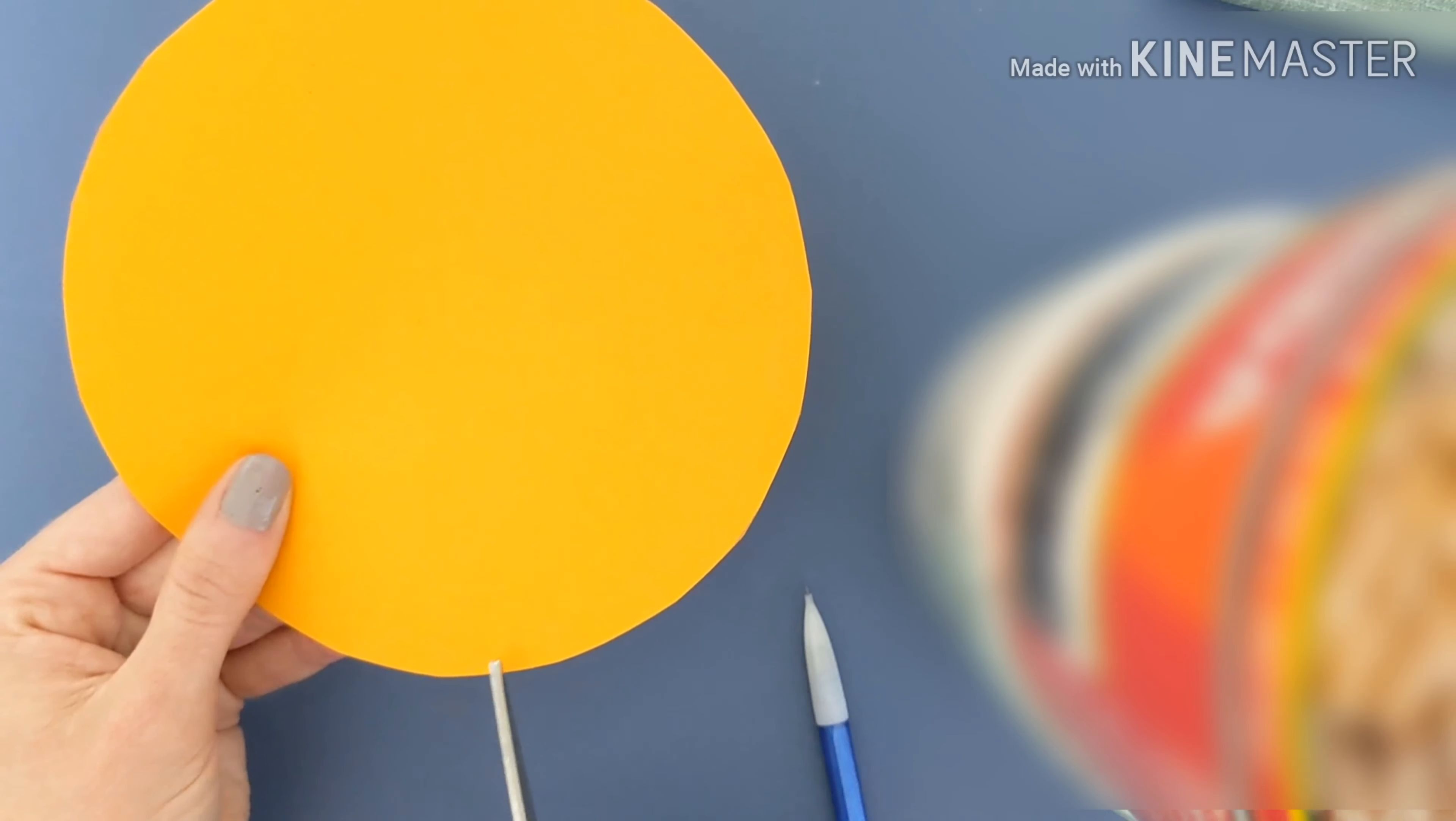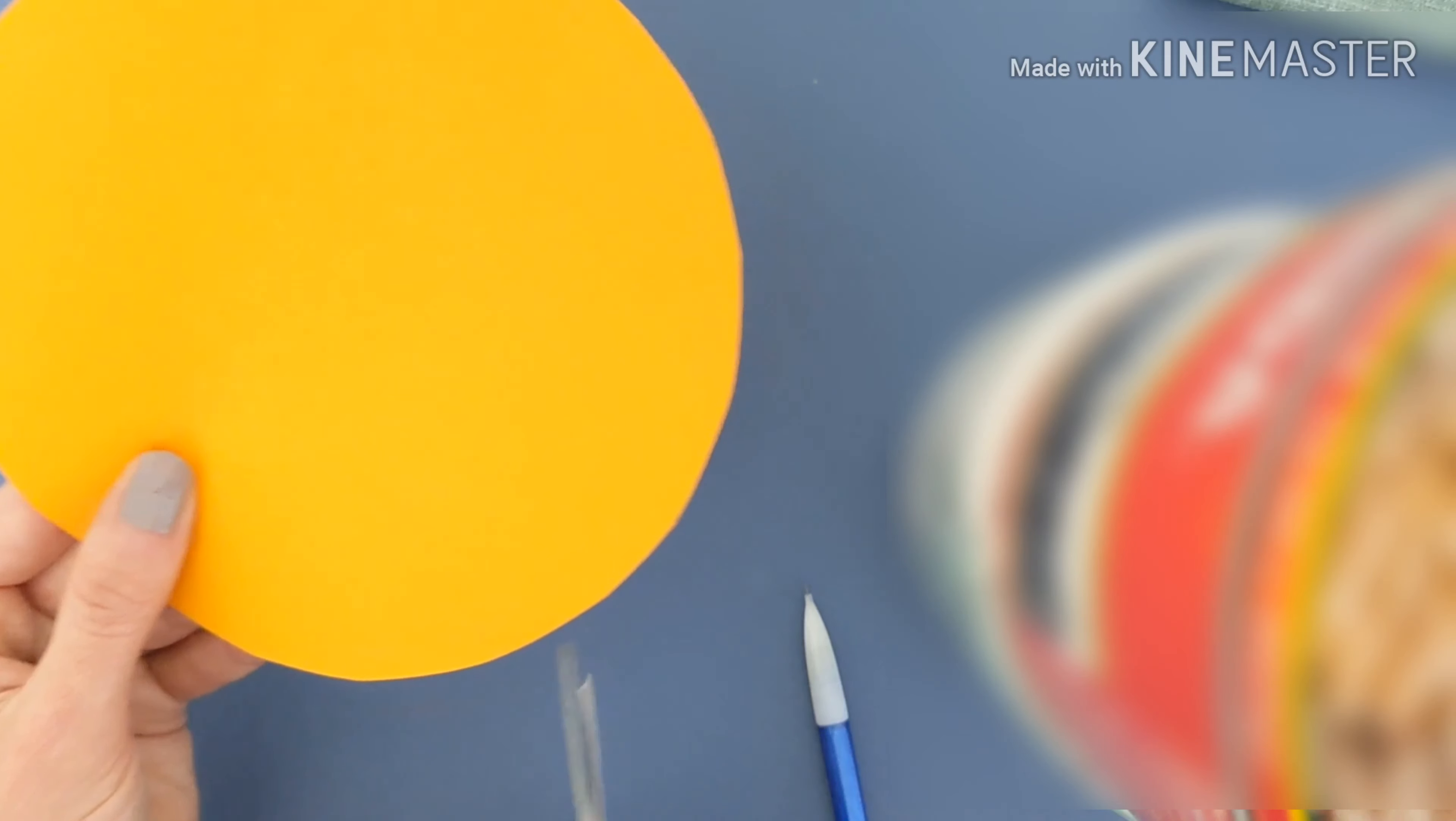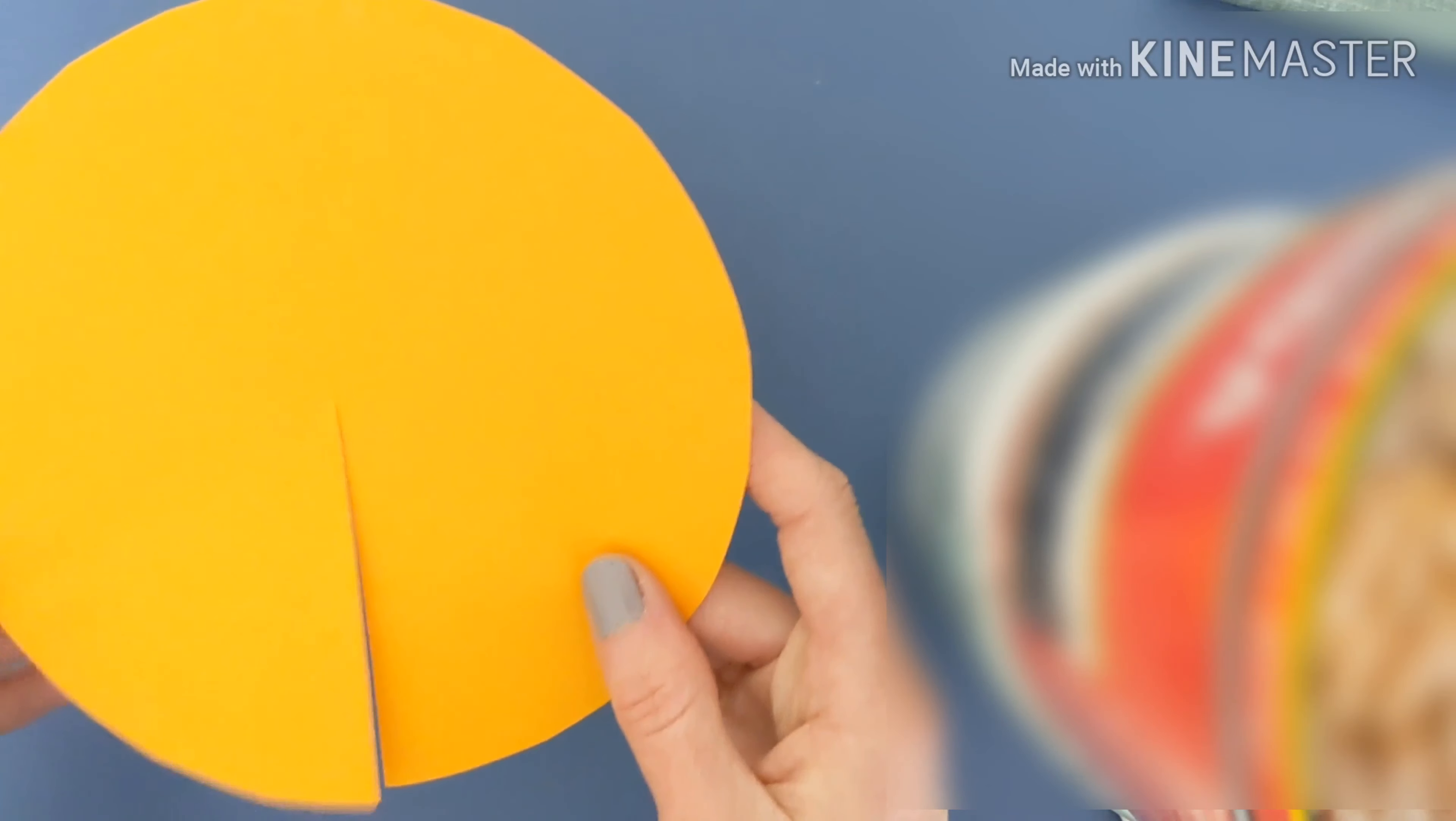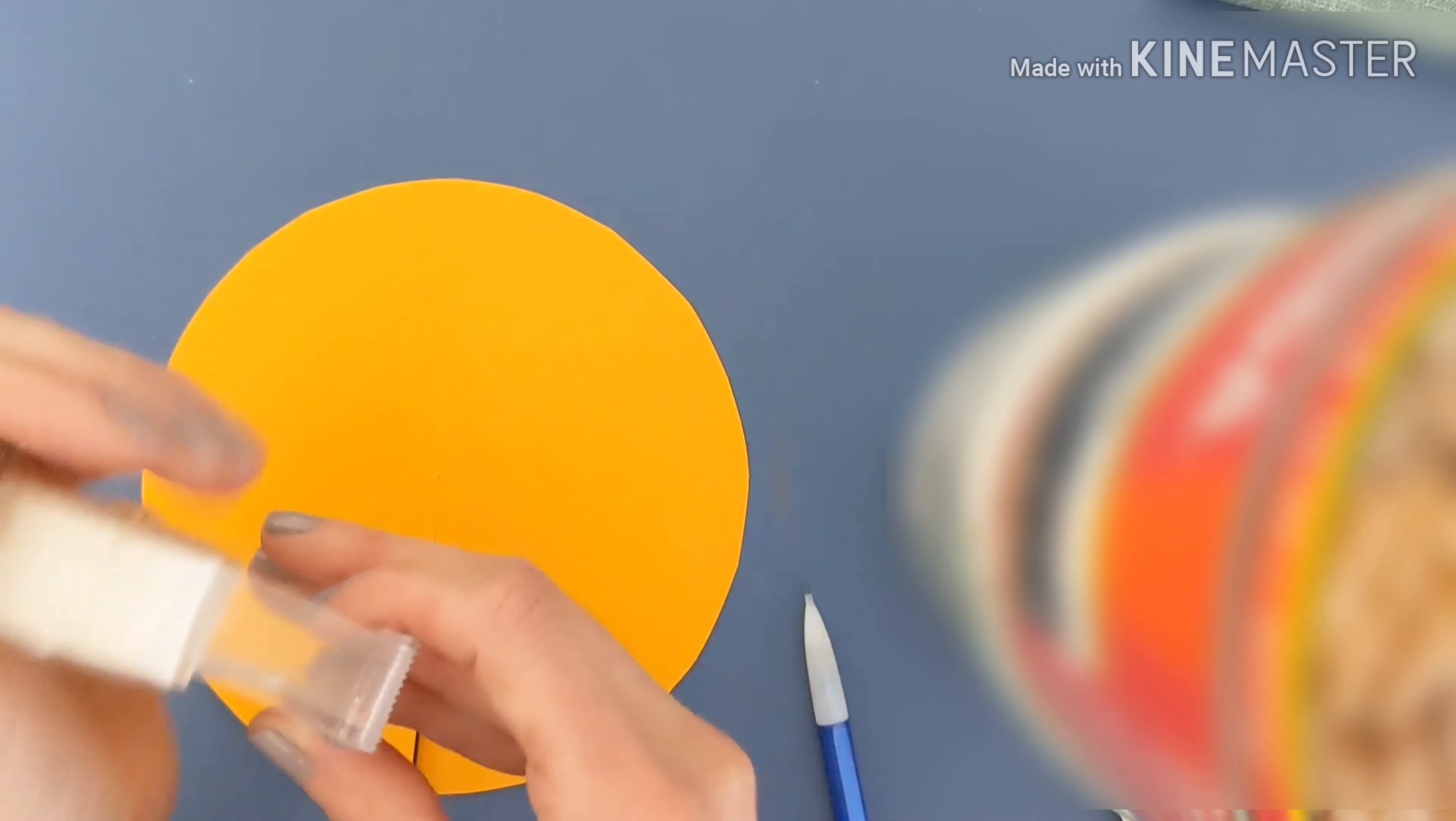Now what you're going to do next is cut from the bottom, just a straight line towards the center, as close to the center as you can get. Nice work. For this next part, you're going to need to have your tape ready. I'm just going to take off a piece right away.